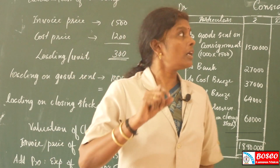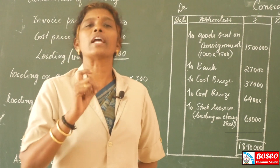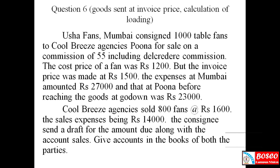In this problem, we will discuss how to adjust invoice price or cost price, how to calculate loading, etc. Usha Fans Bombay consigned 1000 table fans to Cool Breeze Agency, Pune for sale on commission of 5% including 1% delicator commission. The cost price of a fan was Rs.1200 but the invoice was made at Rs.1500. The expenses at Bombay amounted to Rs.27,000 and that at Pune before reaching the goods at godown was Rs.23,000. Cool Breeze Agency sold 800 fans at the rate of Rs.1600, the sale expenses being Rs.14,000. The consignee sent a draft for the amount due along with the account sale. Give accounts in the books of both the parties.